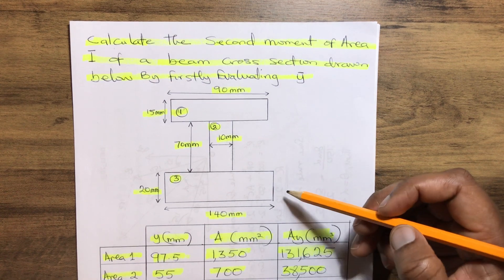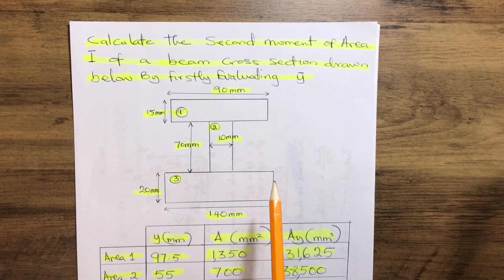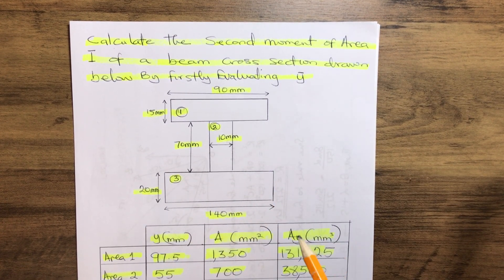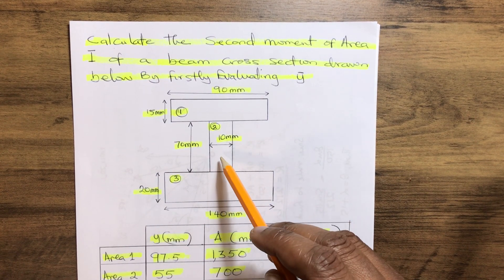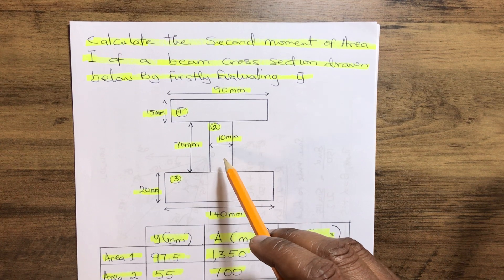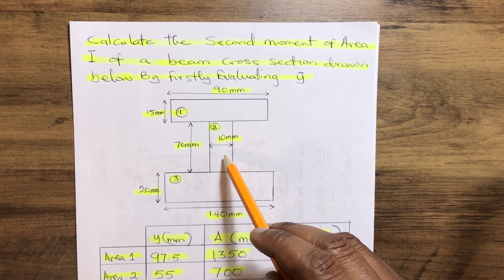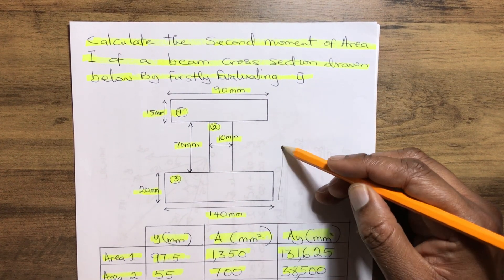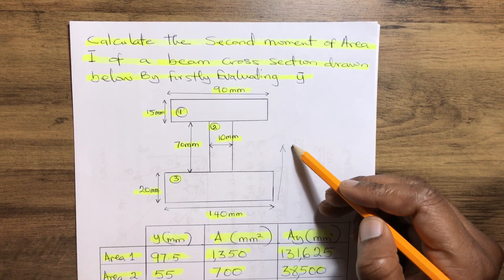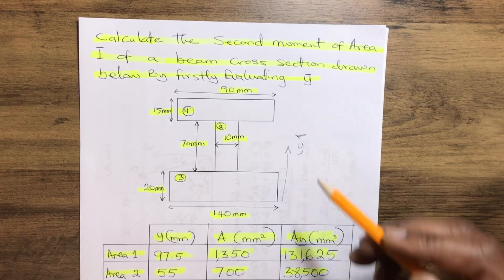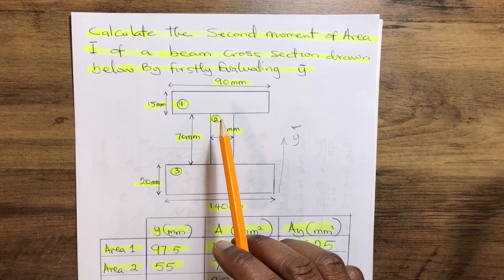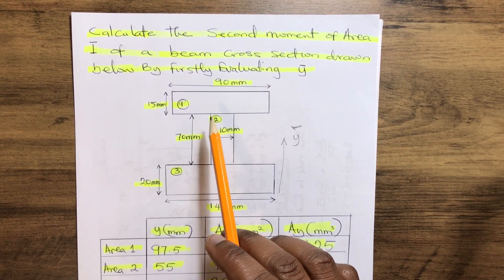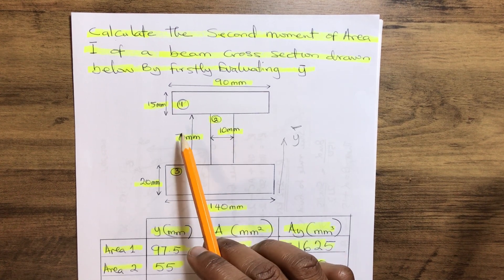Now in order to calculate our Y-bar, which is a distance to the centroid of this particular I-section beam, which we can deduce to be somewhere here, which is Y-bar, how do we calculate it? First of all, we are given all the parameters - the length, the width, and the depth of all sections of the I-section beam.